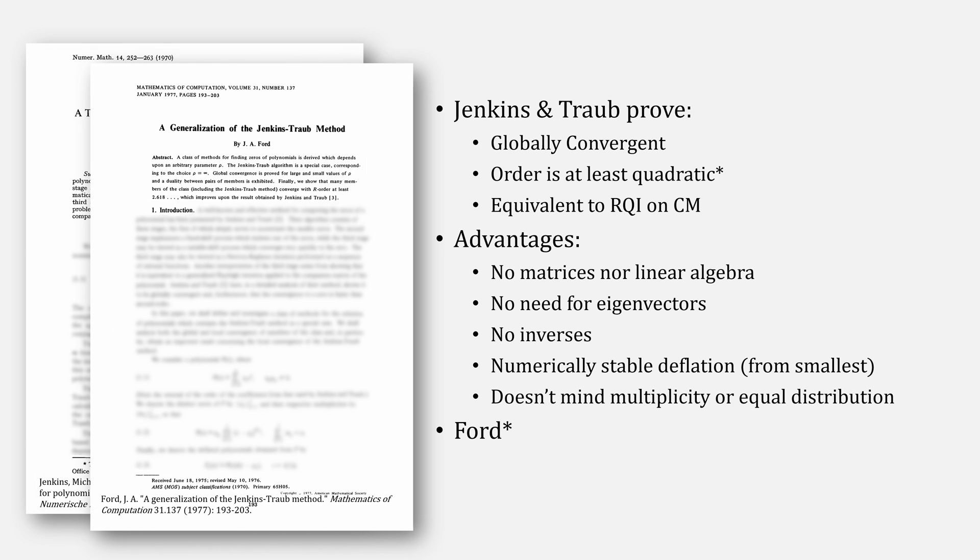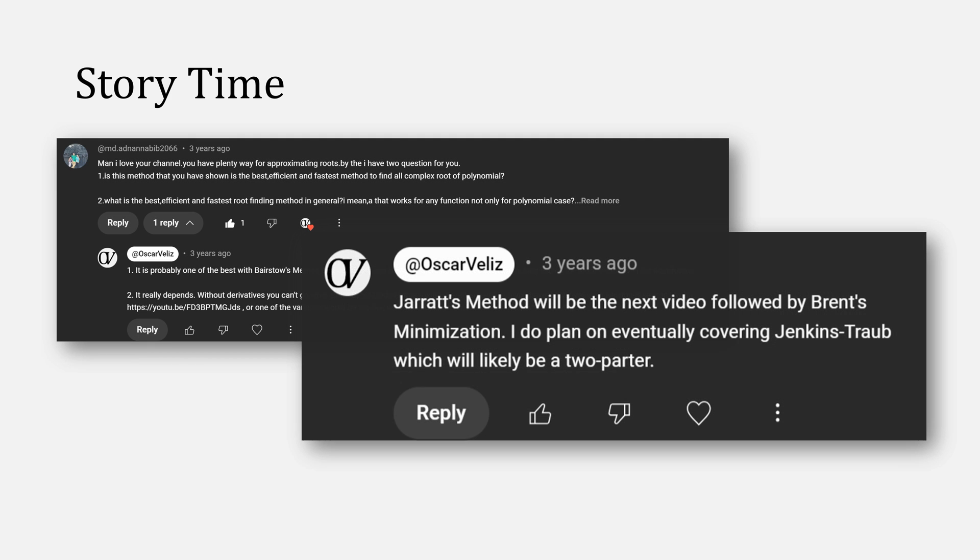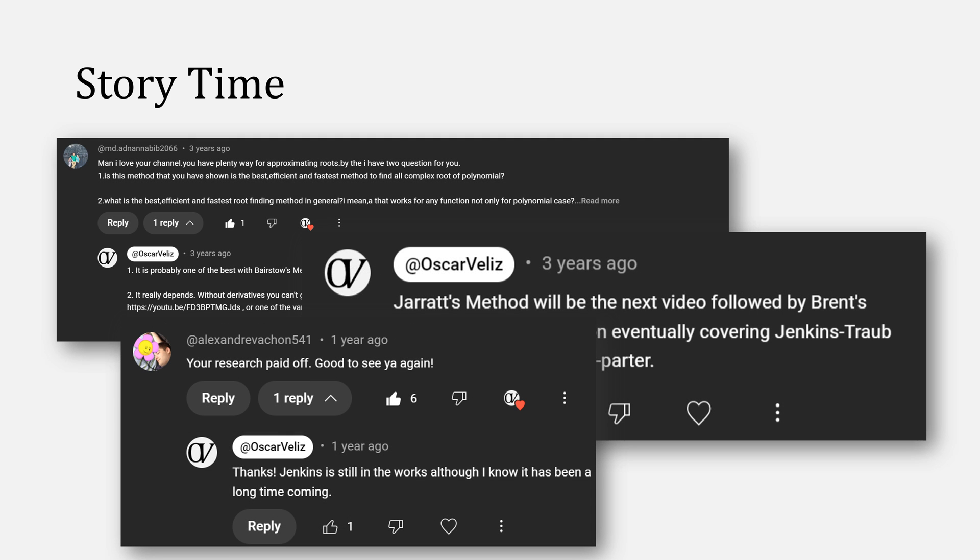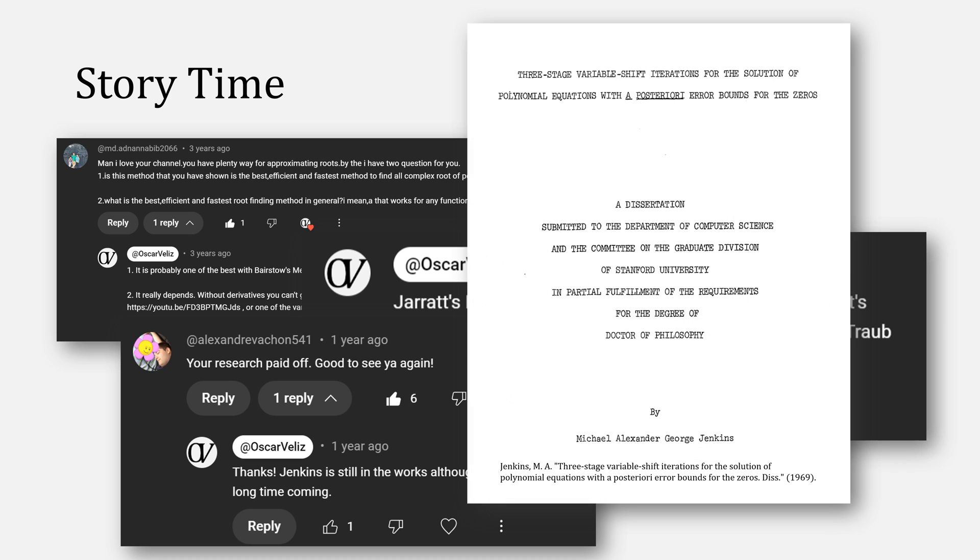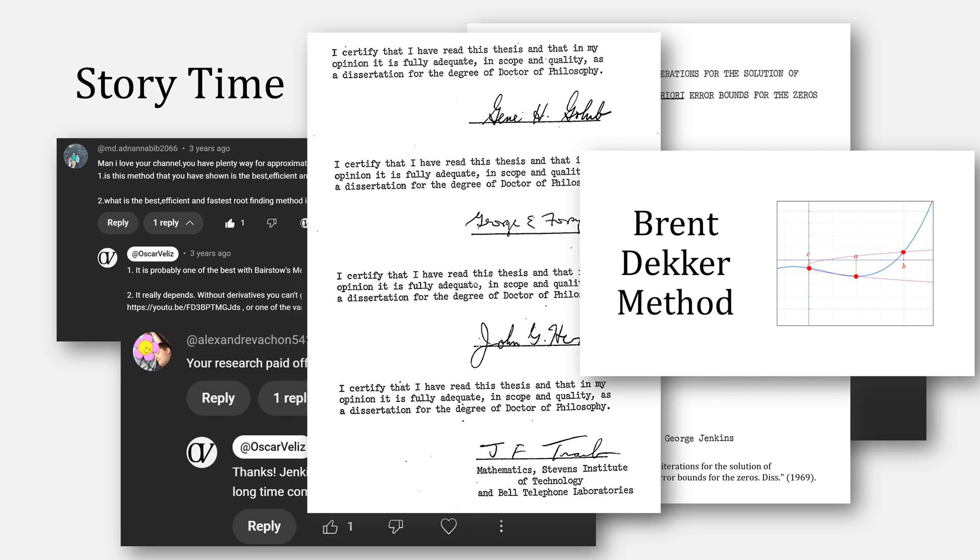Ford was able to prove in this paper, a generalization of the Jenkins Traub method, that the order is 1 plus the golden ratio, or 2.618. And now changing gears for a bit of story, I've actually been meaning to work on this video for quite a while, but things didn't actually click until I read Jenkins's dissertation, where, sidebar, his advisor committee was a real who's who of math folks at Stanford, including George Forsythe, who I mentioned in my video on Brent's method.